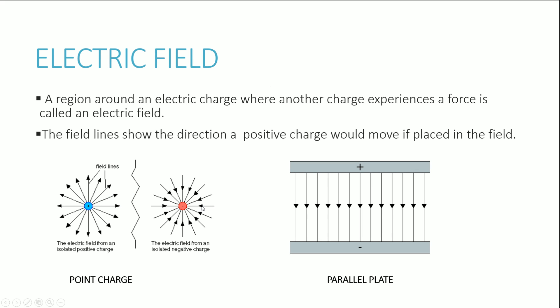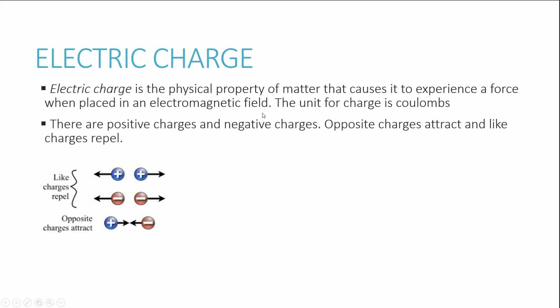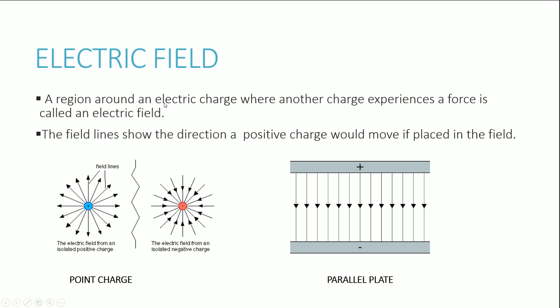Now that we've looked at electric charge, which by definition experiences a force when placed in an electromagnetic field, we're naturally going to be looking at electric fields. An electric field is defined as a region around an electric charge where another charge experiences a force. Field lines basically show the direction a positive charge would move if placed in that particular field, so we think about everything in terms of field lines from the perspective of a positive charge.